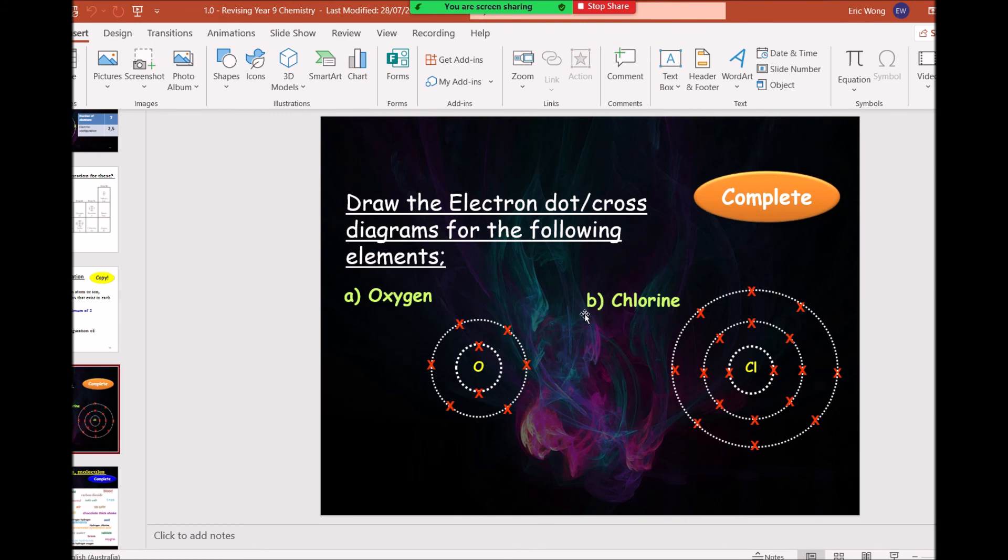If you wanted to write the electron configuration, say for chlorine, you can work it out very simply by firstly counting the number of shells. We have 1, 2, 3 shells. So there's 3 numbers we're expecting here. The first shell is already maxed out at 2. We have 8 electrons. And because we already have a third shell, that means the second shell is maxed out at 8. And then if you just count up the electrons in the outer shell, we have 1, 2, 3, 4, 5, 6, 7. So chlorine would be 2, 8, 7. That's how you write it there.